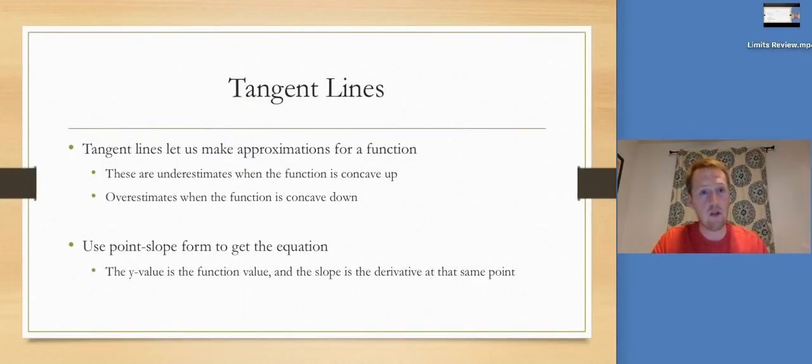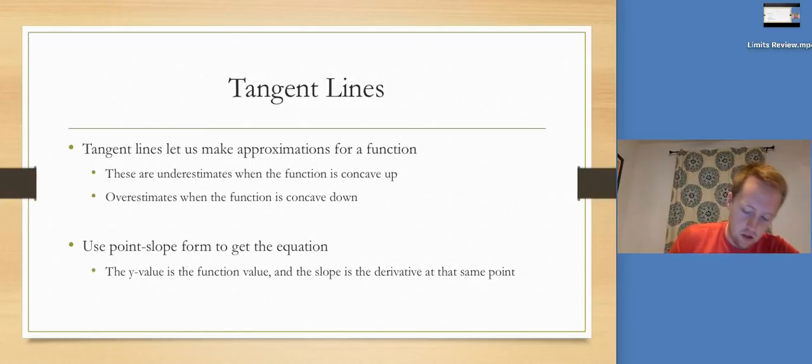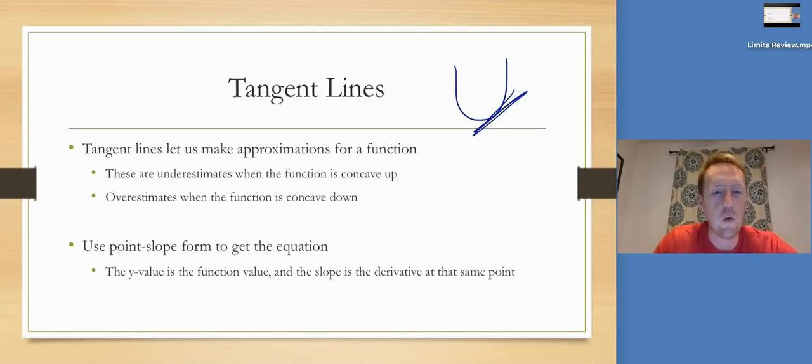So that's it for the basics of derivatives. Our inverses are just do the derivative or plug something in. So what we're going to do now is we're going to look at tangent lines. They let us make approximations for a function. We didn't harp on this idea too much, but if the function is concave up, so it looks something like this, all the tangent lines are below it, right? So any estimations we make with the tangent line are going to be underestimates. And then if it's concave down, the tangent line's above it, so then we would be overestimating.